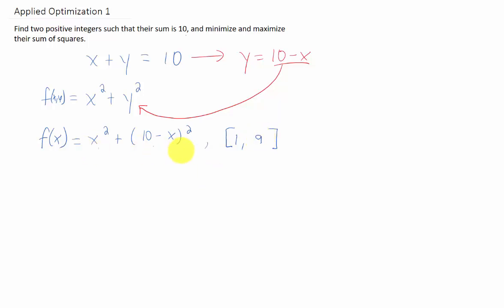Okay, now let's optimize this function. That just means find an absolute max and min. So we should take a first derivative of this function and set it equal to 0 to find our critical points.